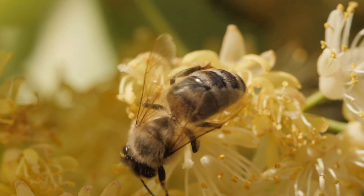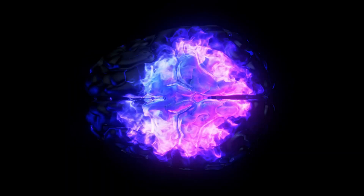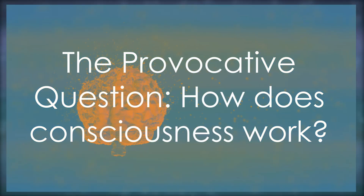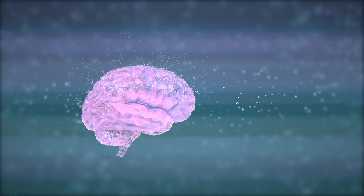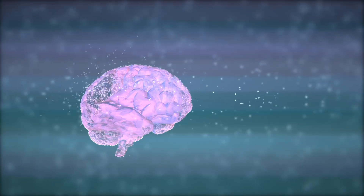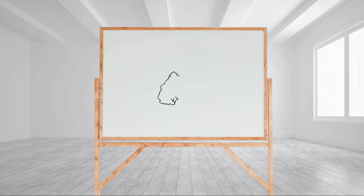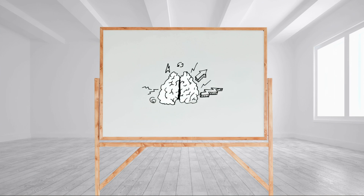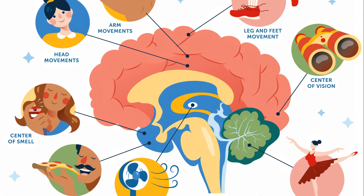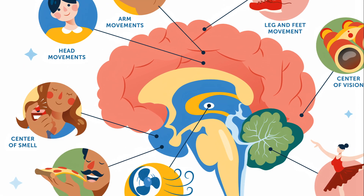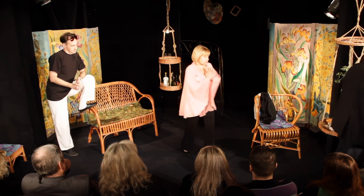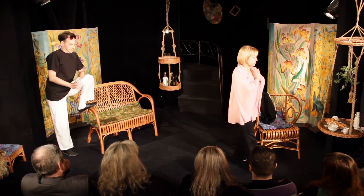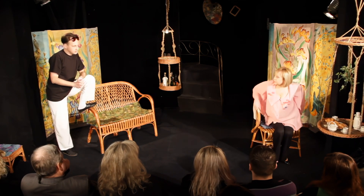Have you ever wondered how your consciousness works? It's a fascinating question. The mind is an intricate web of thoughts, emotions, and experiences, yet we're only actively aware of a fraction of it. There are numerous theories attempting to explain this complex phenomenon, each offering unique insights. Today we're going to focus on one such theory: the Global Workspace Theory.